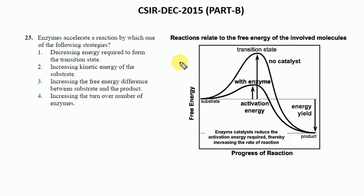Just look at this graph. If you see this graph, there is activation energy of any substrate. In any enzyme, there is a particular energy required for any substrate to convert to product. That energy is known as activation energy. That activation energy is reduced by the enzyme. This graph is the substrate energy profile with enzyme, and the second graph is with no catalyst. Enzymes catalyze and reduce the activation energy required, thereby increasing the rate of reaction. That means the first option is correct: decreasing energy required to form the transition state.